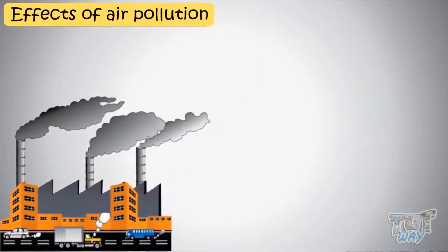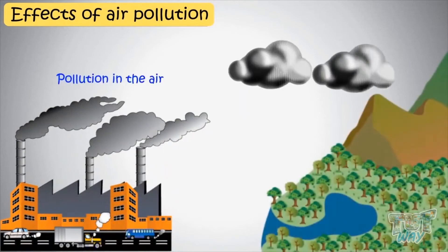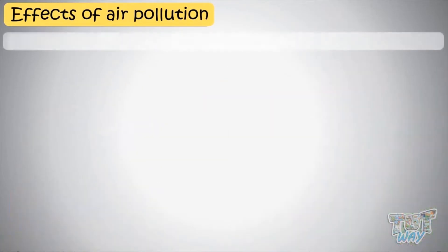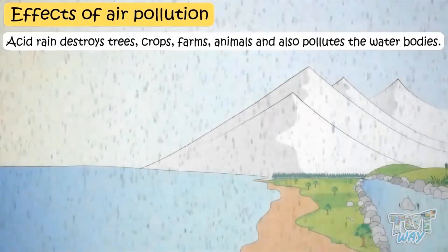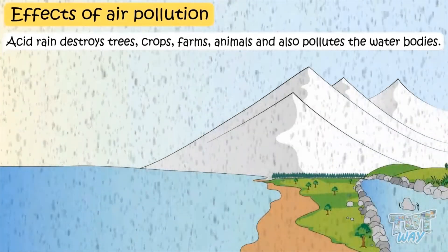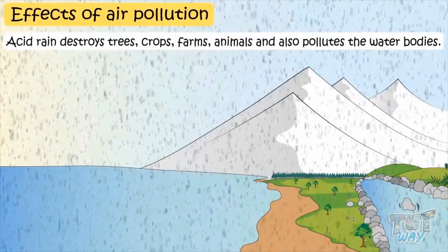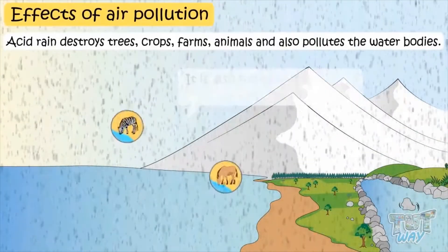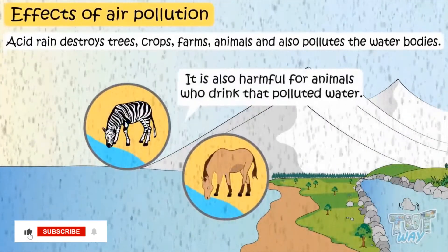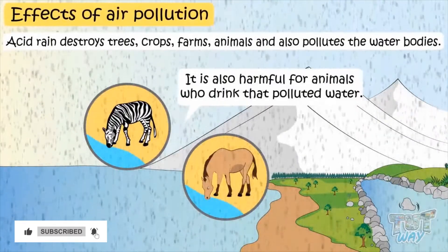Chemical pollutants in the air, when mixed with rain, form acid rain, which is very harmful for all living beings. Acid rain destroys trees, crops, farms, animals, and also pollutes the water bodies, which again harms the living things that depend on the water of that water body.